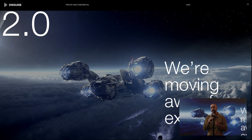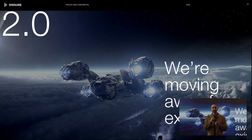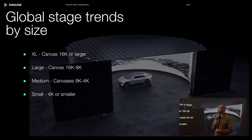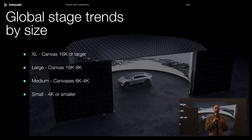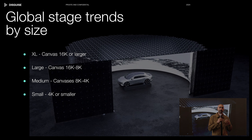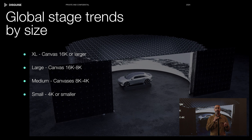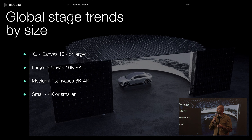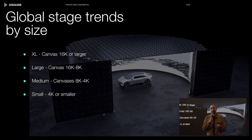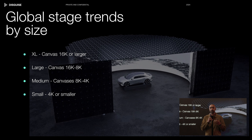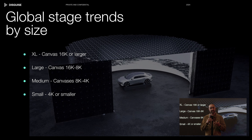Virtual production 2.0 is an evolution, not a revolution of VP 1.0. In general, we qualify stages by canvas size — the number of pixels on a given LED wall. We are seeing a lot of growth in medium-size stages. The world just needs more of them and we see a lot more transactions in that size.